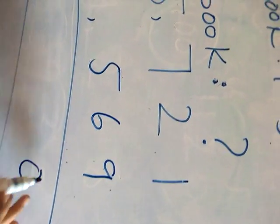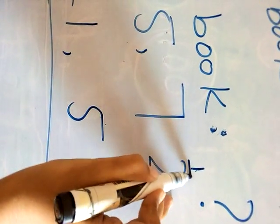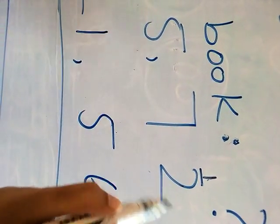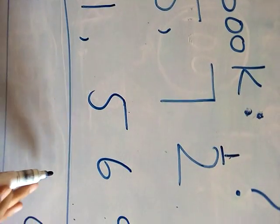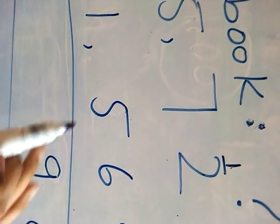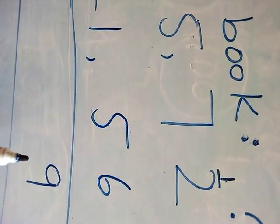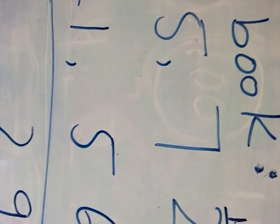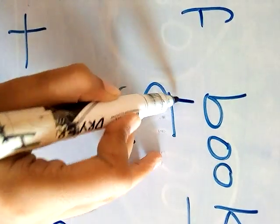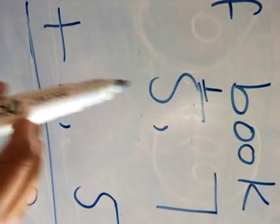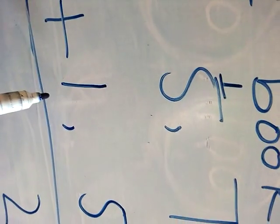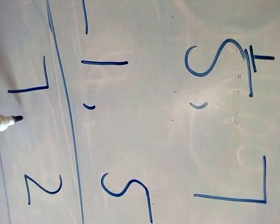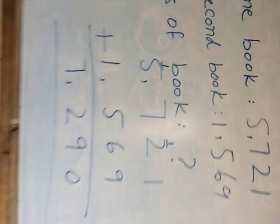10, 0, 1. Uppar carry chala gya. 6 plus 2, 8. 8 plus 1, 9. 7 plus 5, 12. 2, 1. Uppar carry chala gya. 5 plus 1, 6. 5 plus 1, 6. And plus 1, 7. Okay. Is there any problem?